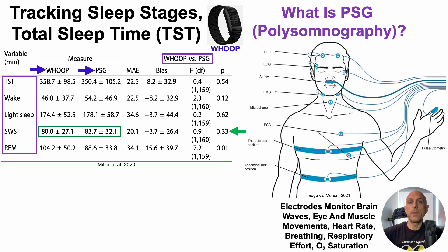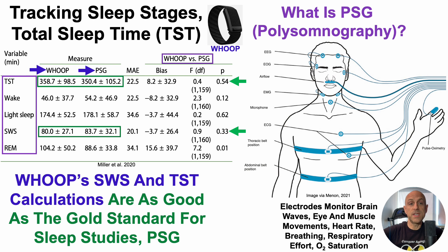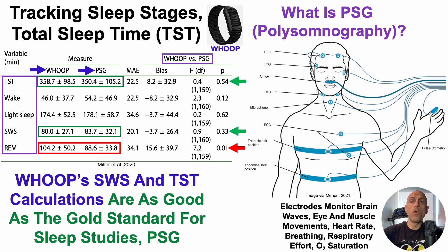What about total sleep time, which we need to calculate slow wave sleep percentage? Whoop calculated 359 minutes per person on average; PSG calculated about 350 minutes on average. These data were also not significantly different. However, where Whoop is not great is quantifying REM sleep — Whoop calculated 104 minutes versus PSG's 89 minutes, a significant difference, meaning Whoop overestimated REM sleep by about 16 minutes. For slow wave sleep and total sleep time, though, Whoop is as good as the gold standard.